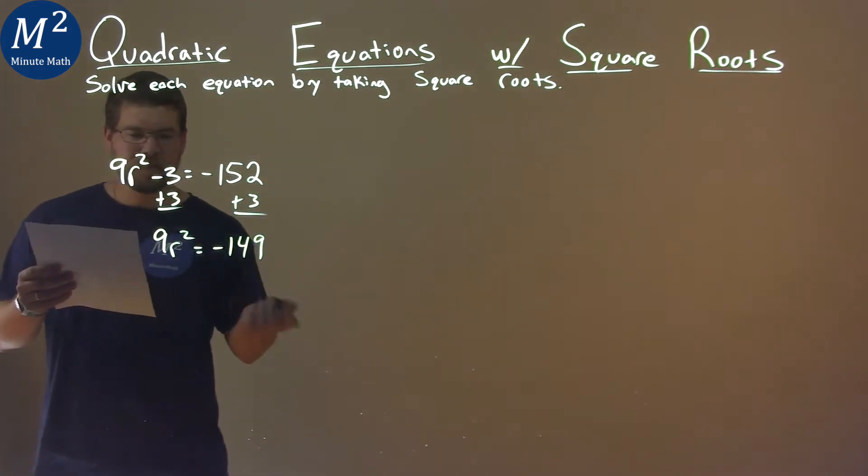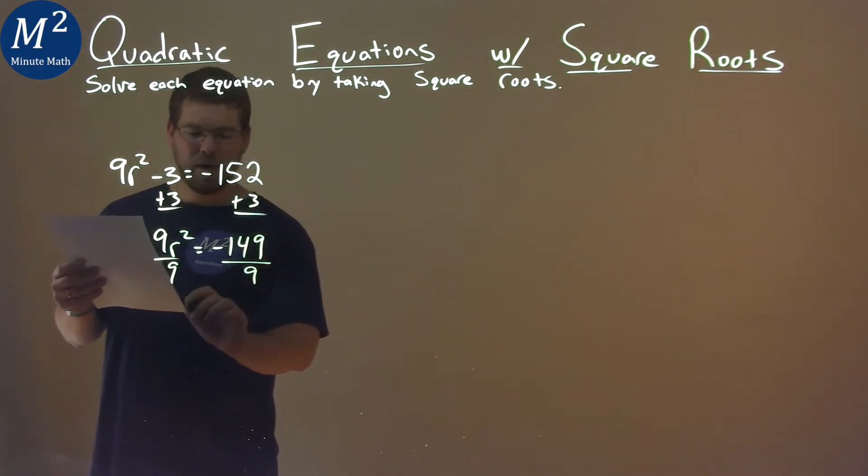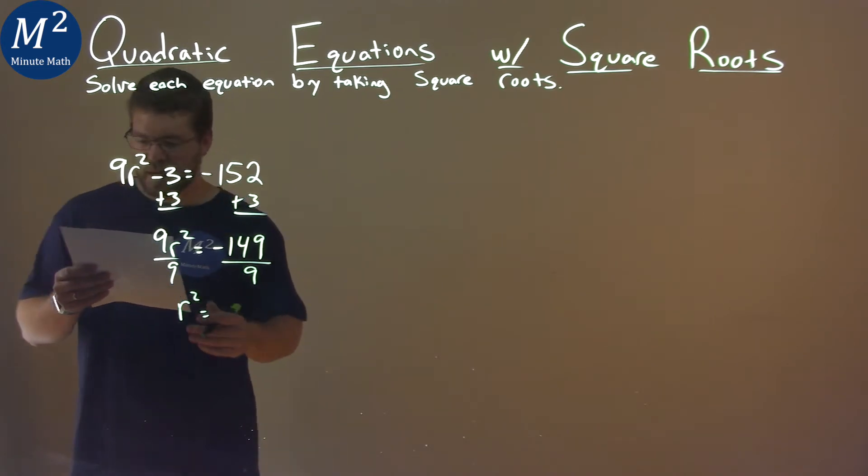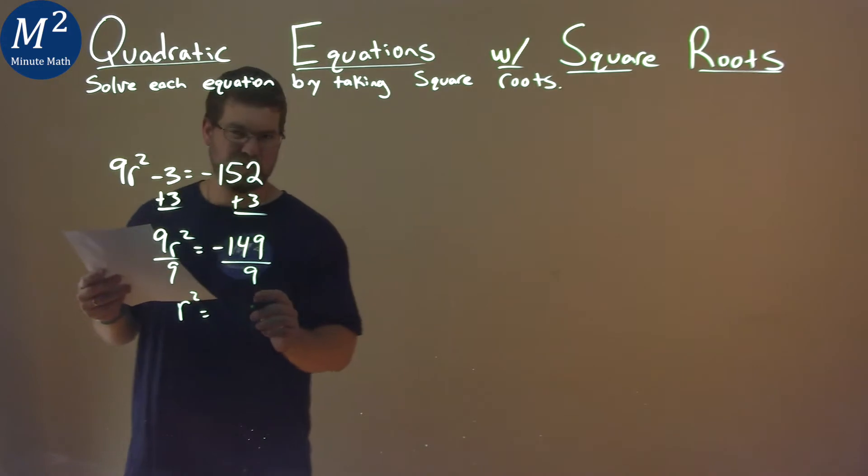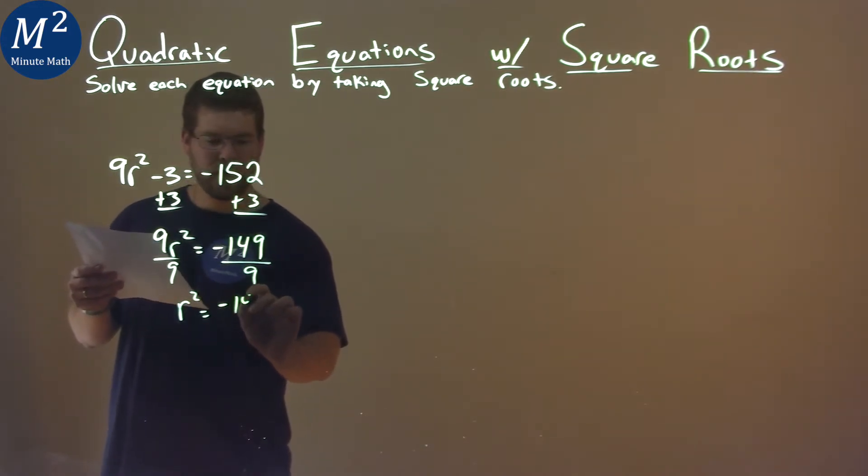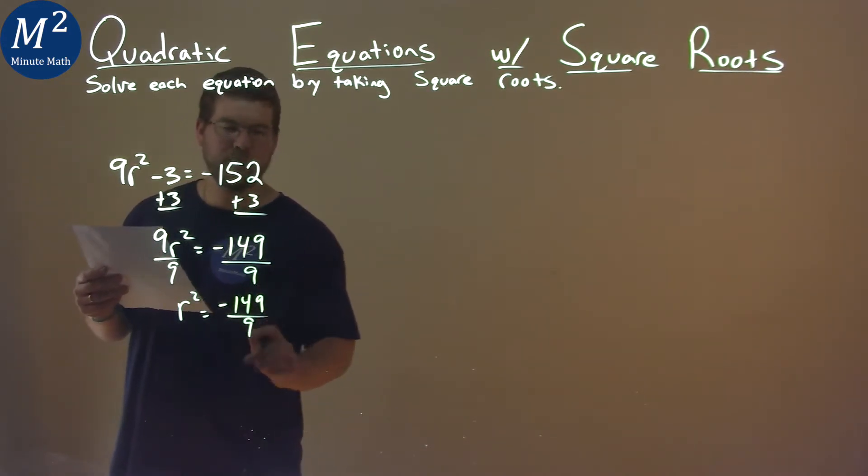Not too bad. Divide both sides by 9, and now I have r squared by itself, and really negative 149 divided by 9 doesn't simplify anymore. So, negative 149 over 9. Bummer.